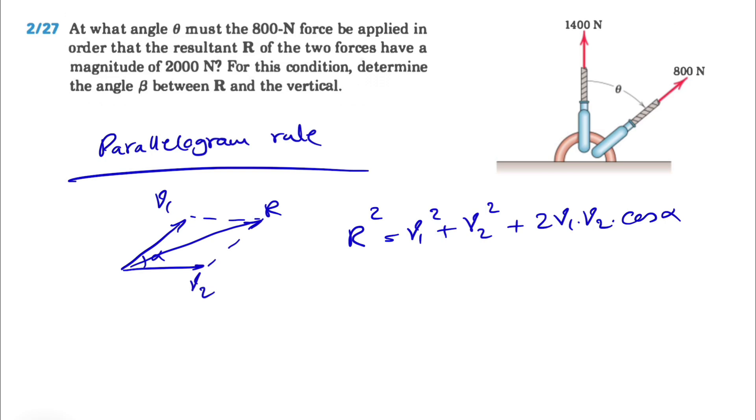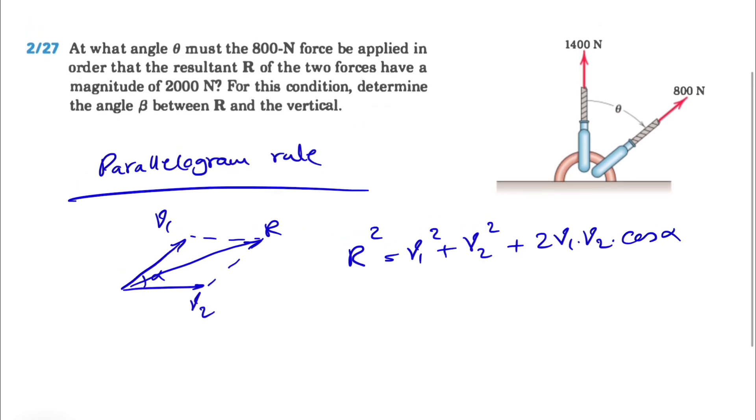So we have the same thing here. This will be our resultant R. So R squared would be 1400 squared plus 800 squared plus 2 times 800 times 1400 times cosine of theta.